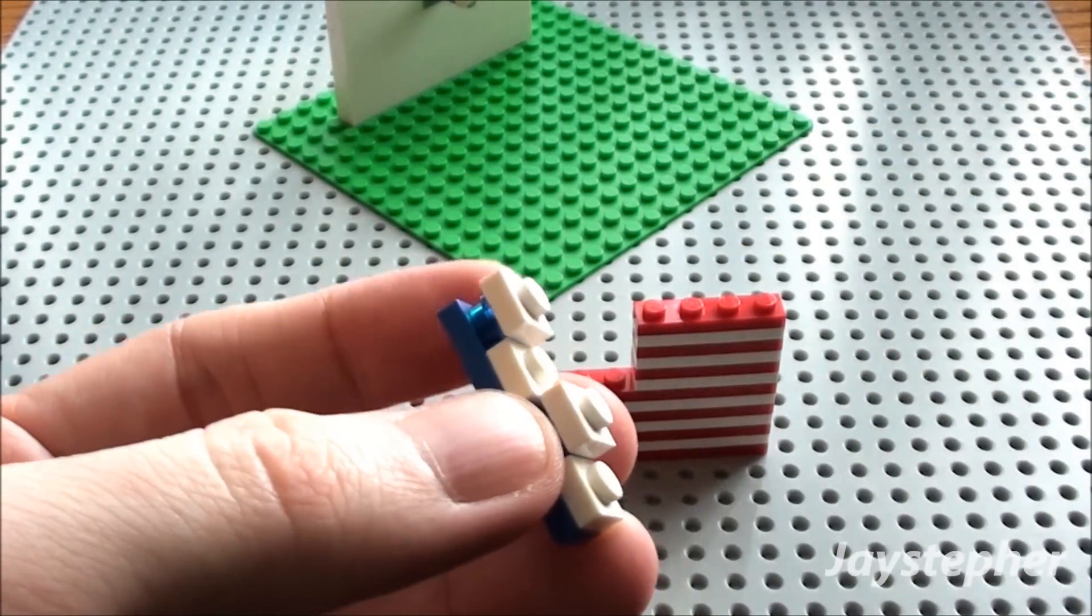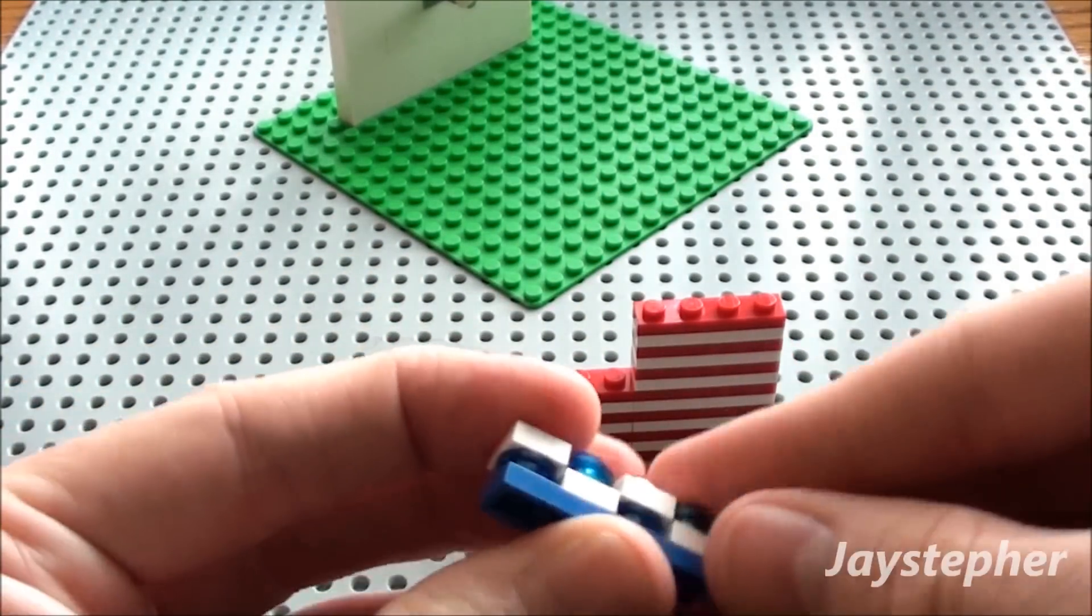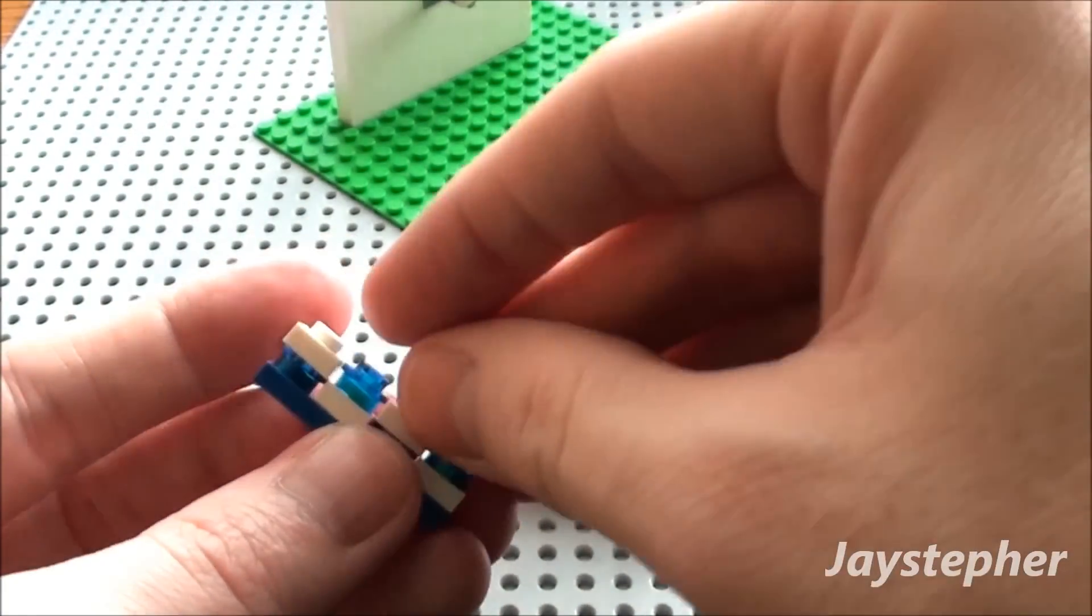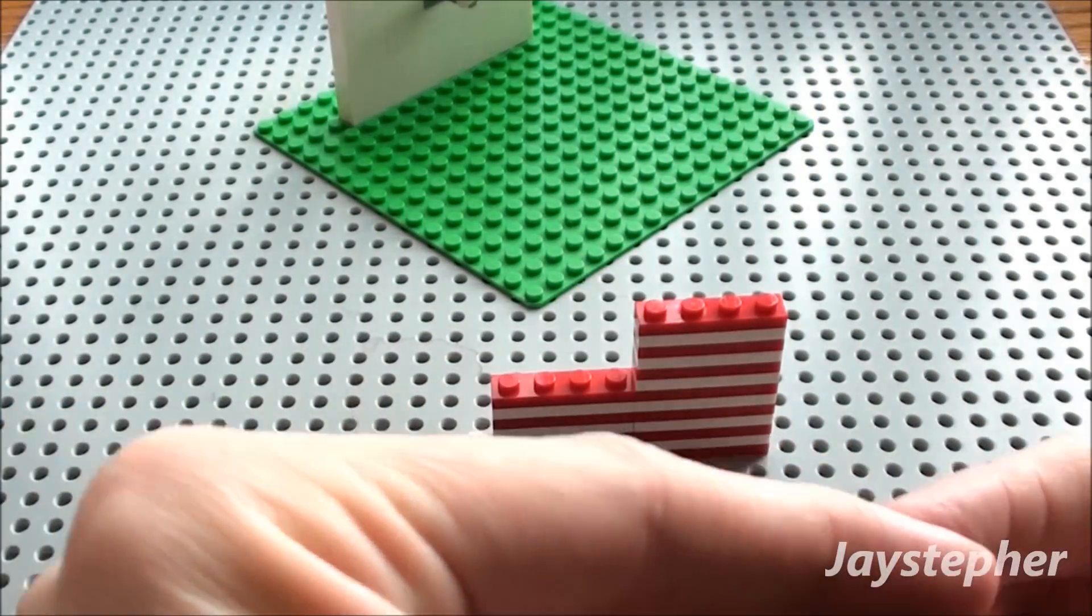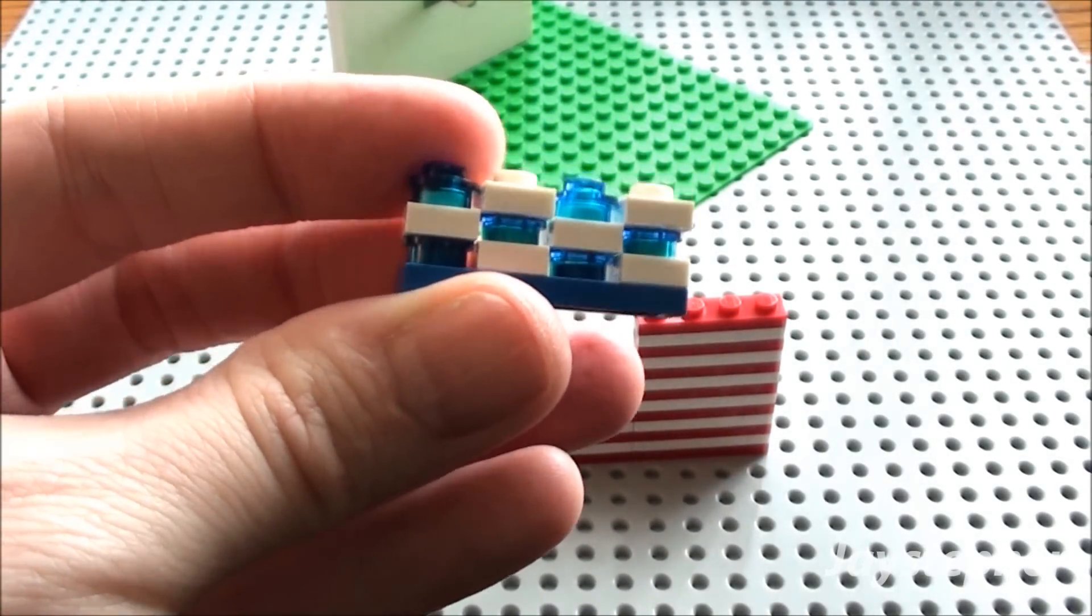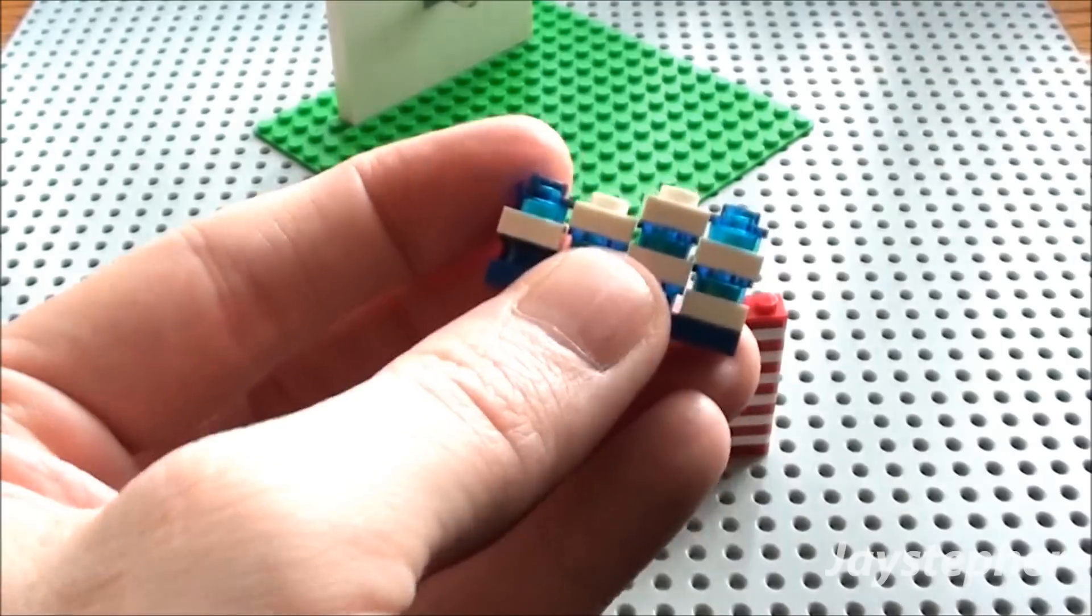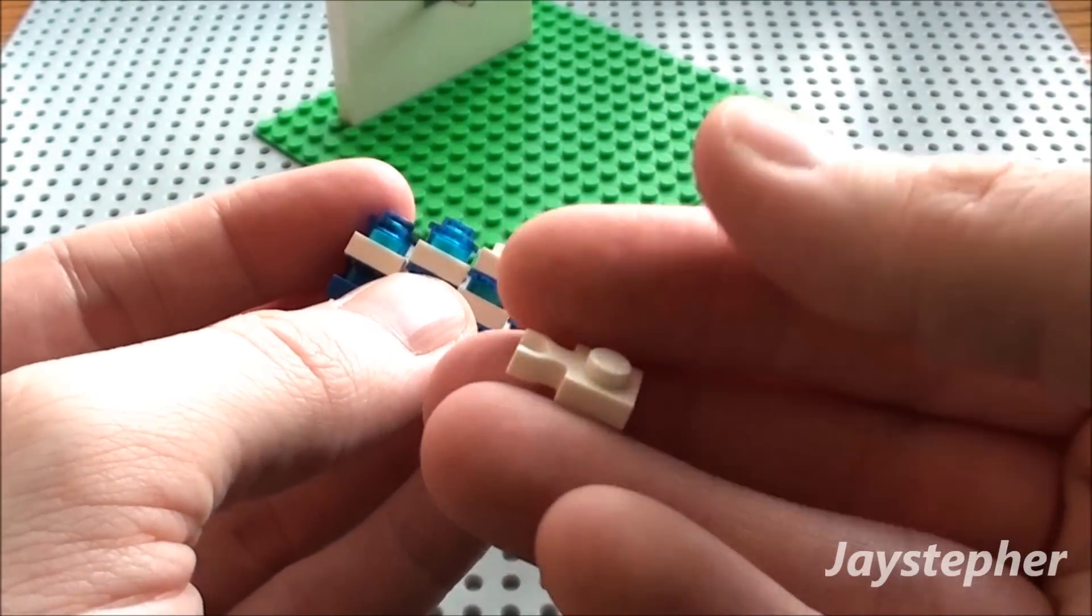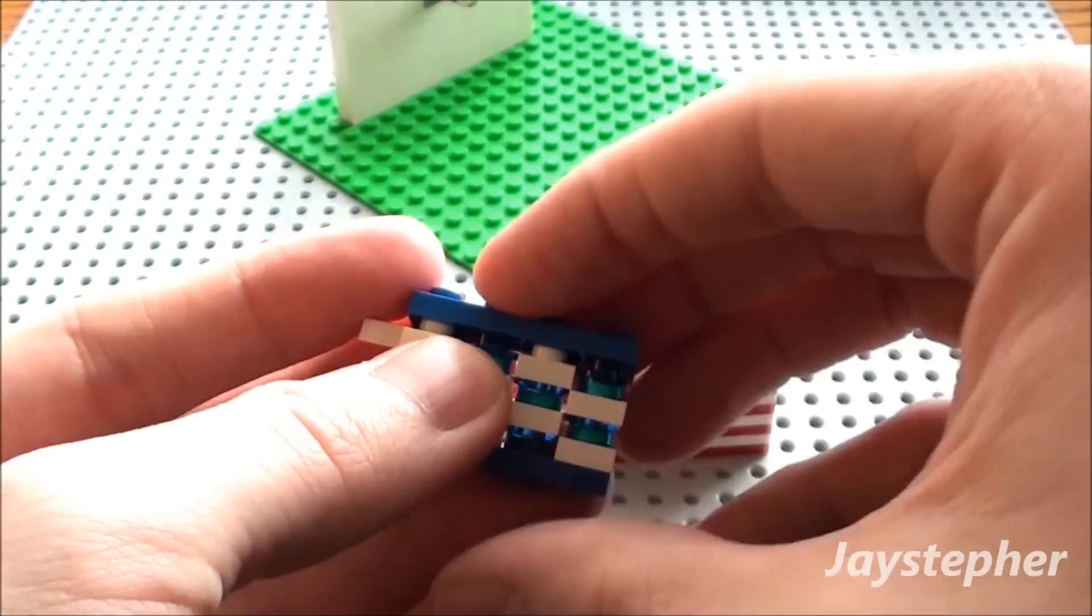So as you can see, I'm going to build this up a few levels. Four levels will be fine. Our last stud. And I'm going to take a holder plate. Stick it here at the end. And finally our 1 by 4 blue.